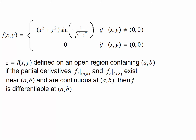Here is a sufficient condition: if a function is defined on an open region containing (a,b) and the partial derivatives exist near (a,b) and they are continuous at (a,b), then the function is differentiable at (a,b). So let's employ this.